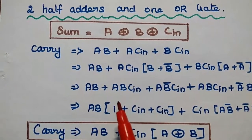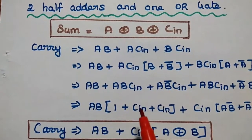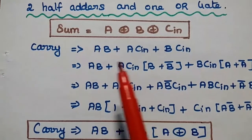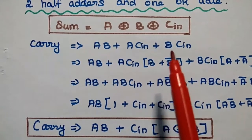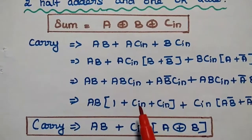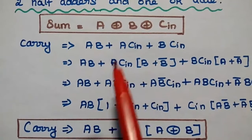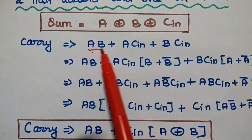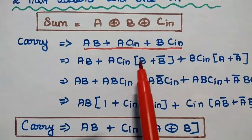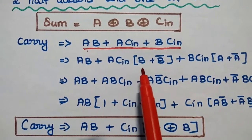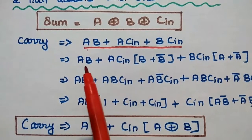In order to obtain the full adder in terms of half adders, we have to convert this expression in terms of XOR format. For that, we have to simplify this carry expression using a simplification method.